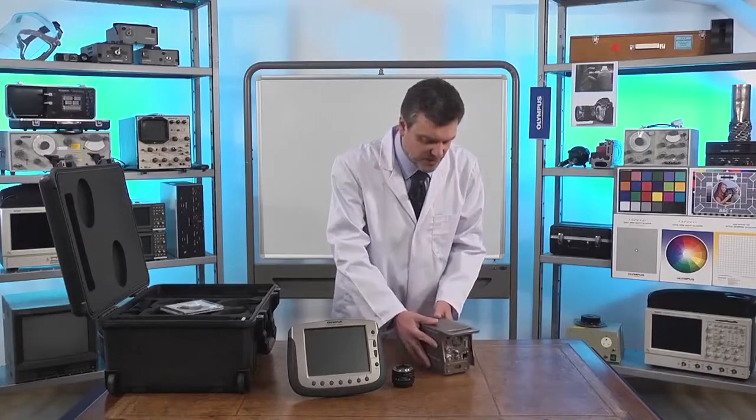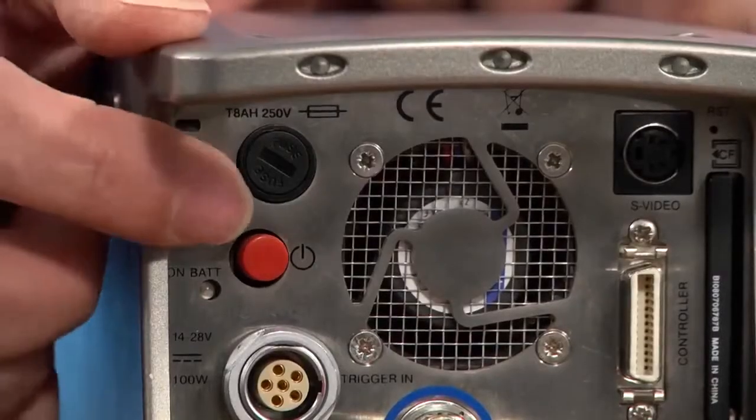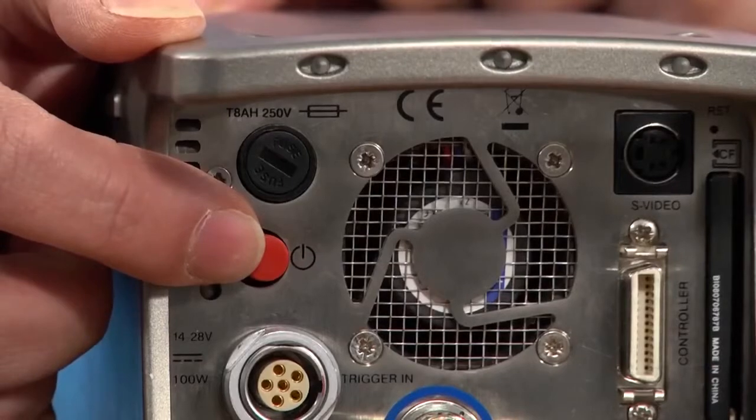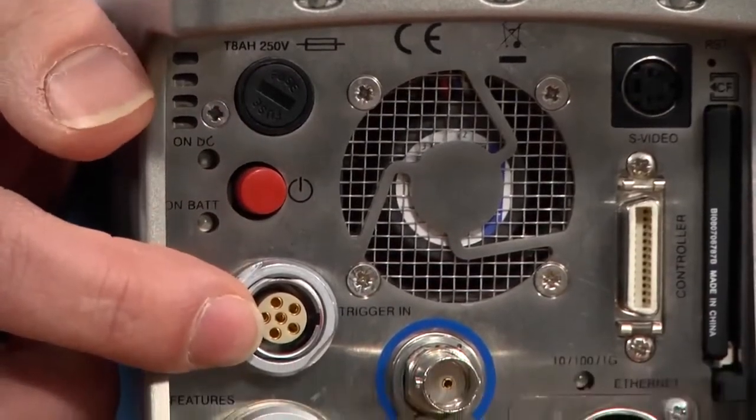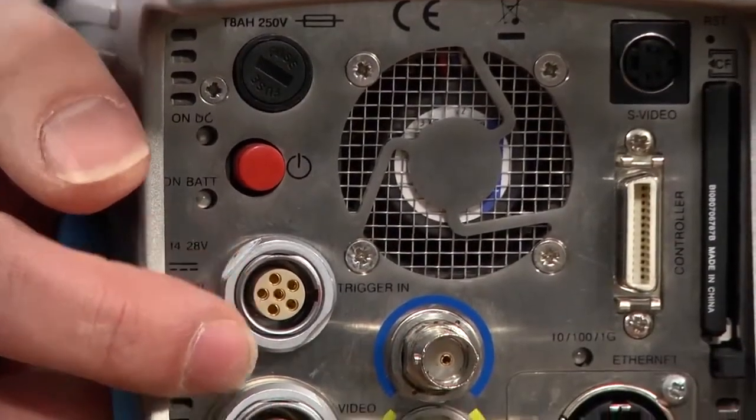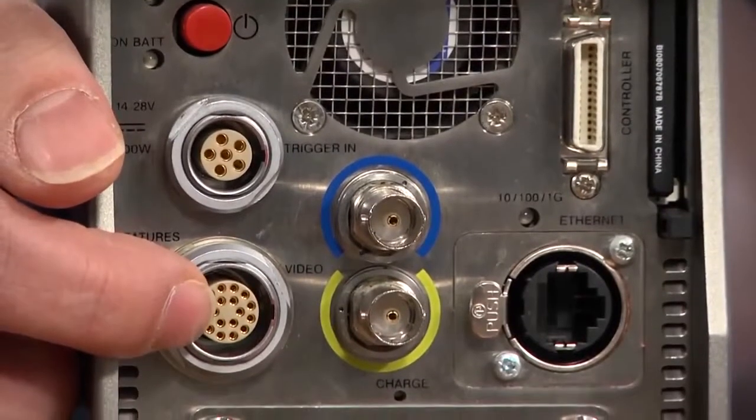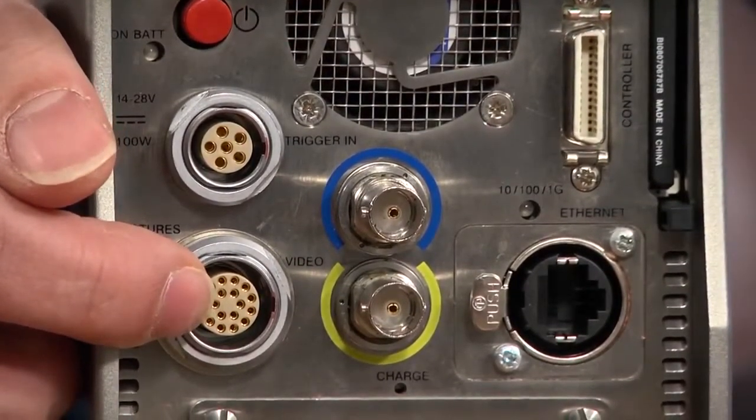If I rotate so you can see the back panel, over here we have the power switch, then there's the power input, then the feature connector with multiple trigger and sync inputs and outputs.